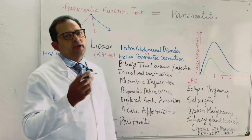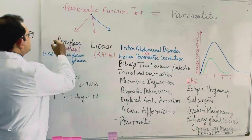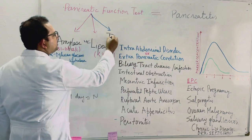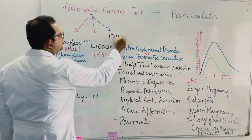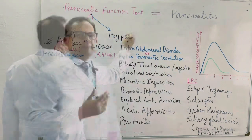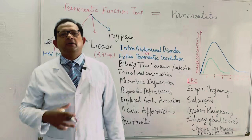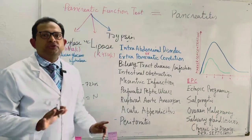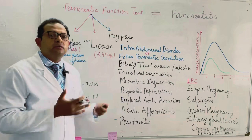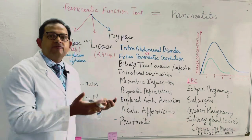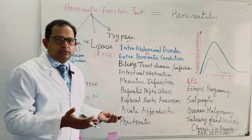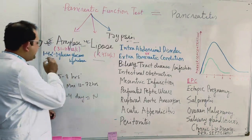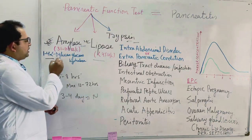The pancreatic function test consists of basically three tests: one is amylase, the second is lipase, and the third is trypsin. The human diet consists of carbohydrate, fat, and protein, and the pancreas has all three enzymes which digest these. Amylase takes part in the digestion of carbohydrate and is also called one-four-alpha-D-glucan glucanohydrolase.